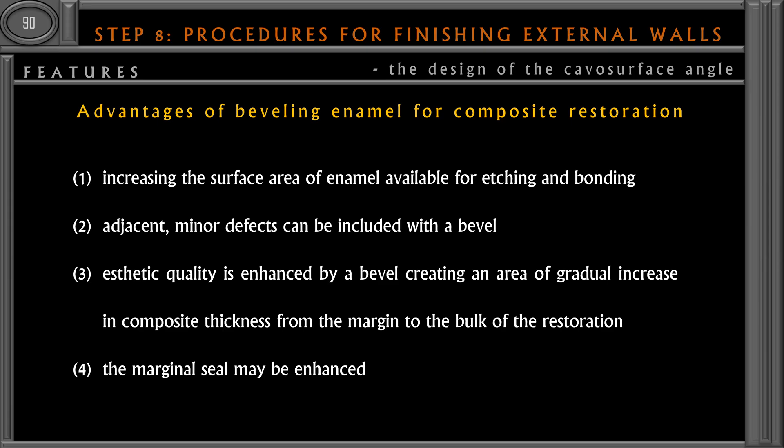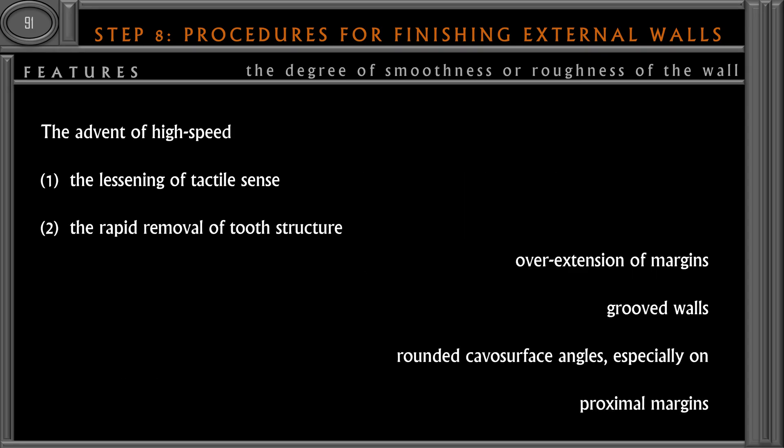For composite restorations, a bevel is necessary because it increases the surface area of enamel available for etching and bonding, which enhances bond strength. Small defects can be included within the bevel without extending the entire cavity. The aesthetic transition from restoration to tooth will be very difficult to detect, and the marginal seal is enhanced because more enamel is available for bonding — composite always bonds better to enamel.